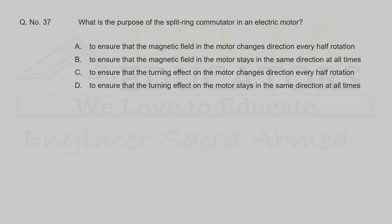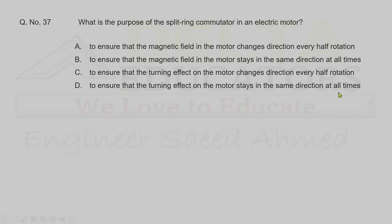Question 37. What is the purpose of a split ring commutator in an electric motor? Options A and B mention changing the magnetic field direction — incorrect. Option C mentions the turning effect changing direction — incorrect. The split ring commutator ensures the turning effect on the coil stays in the same direction at all times. Correct option is D.